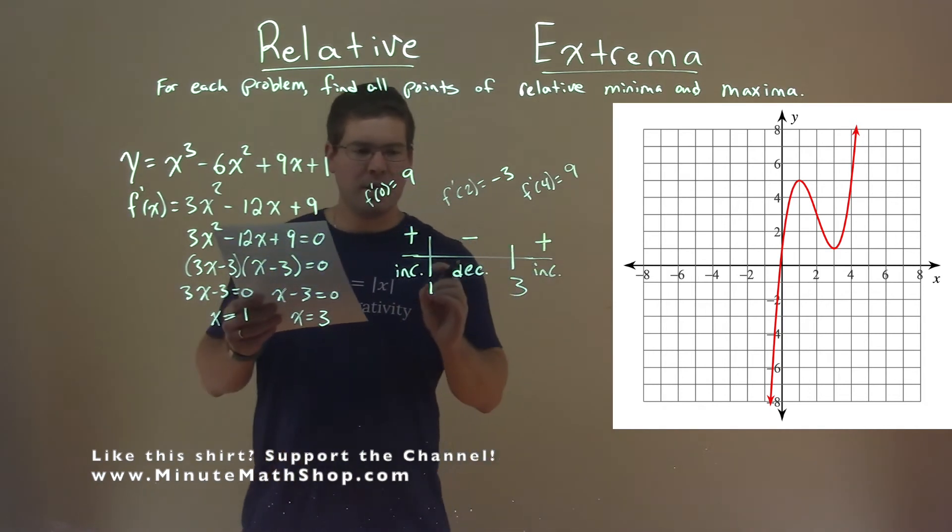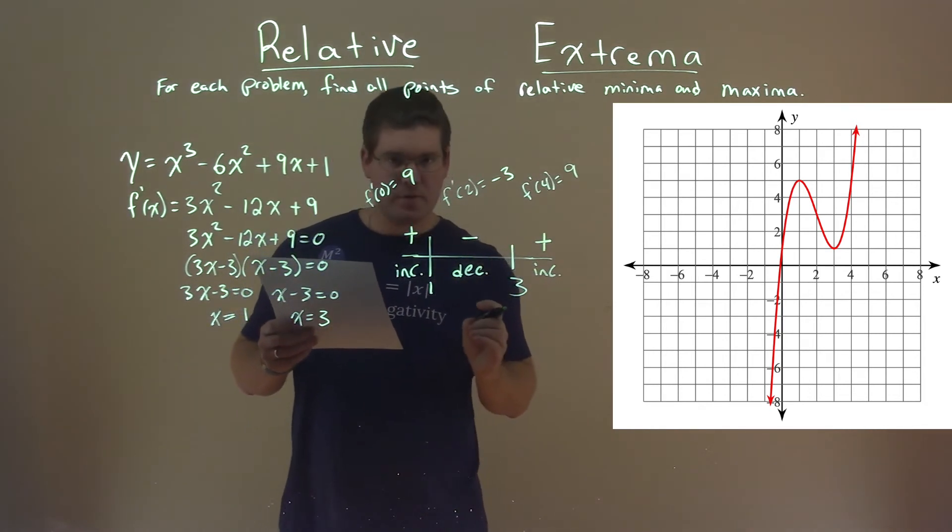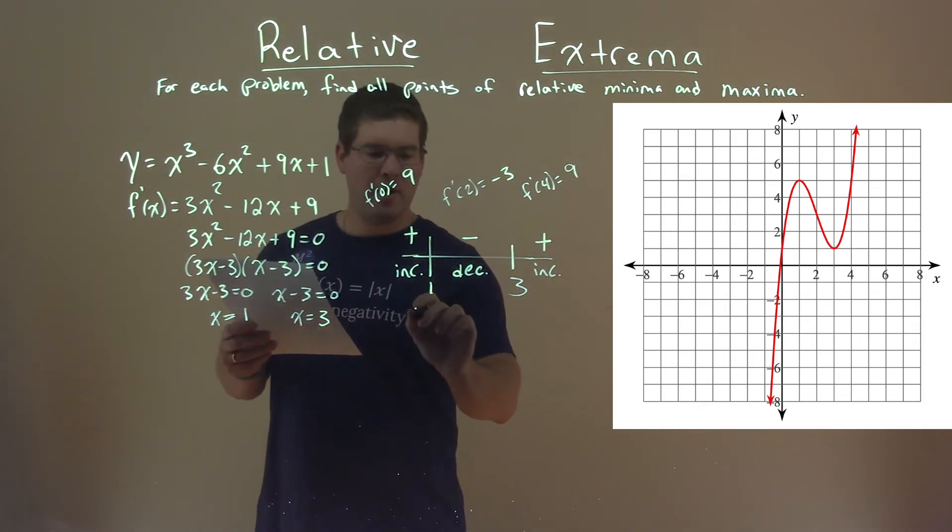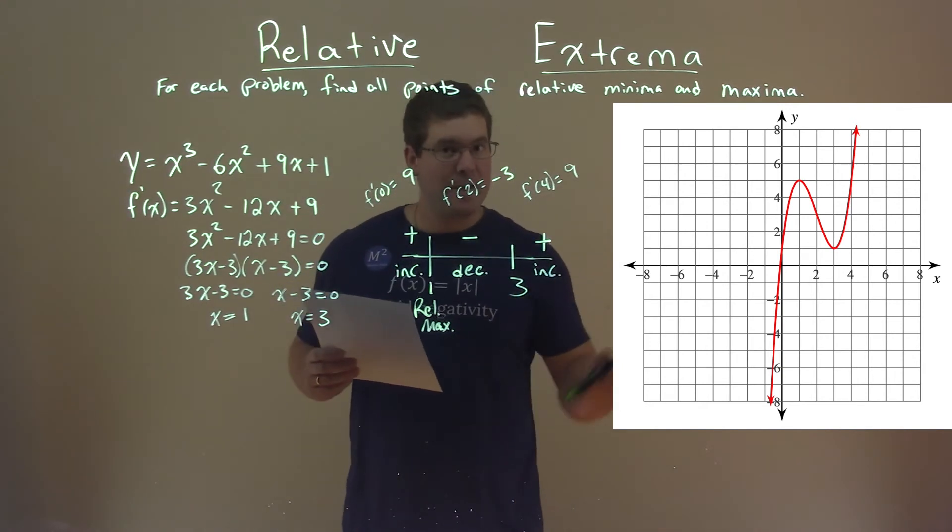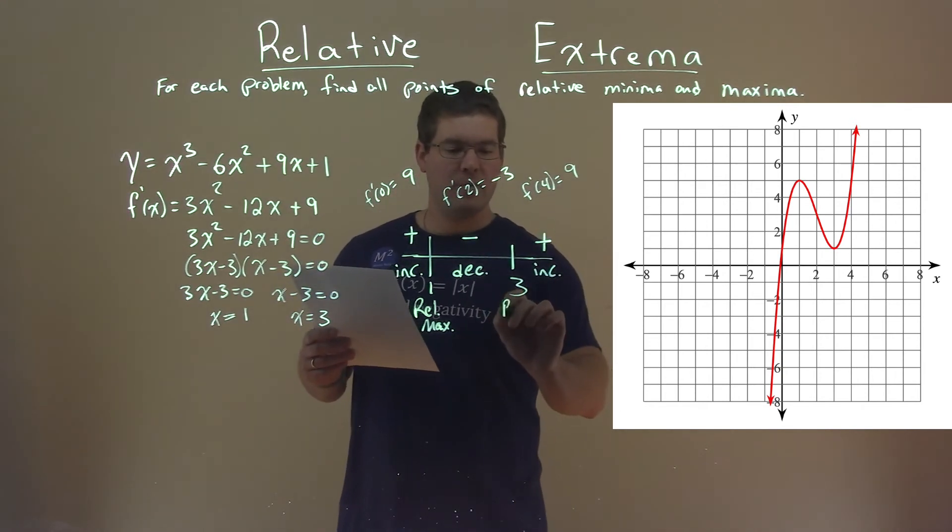So if my original function is increasing then decreasing, we have what we call a relative max there. Then if the function is decreasing then increasing, we have a relative minimum there.